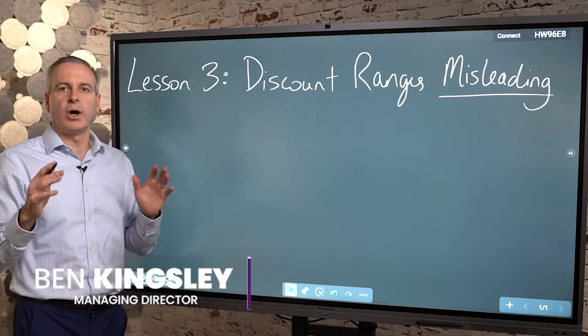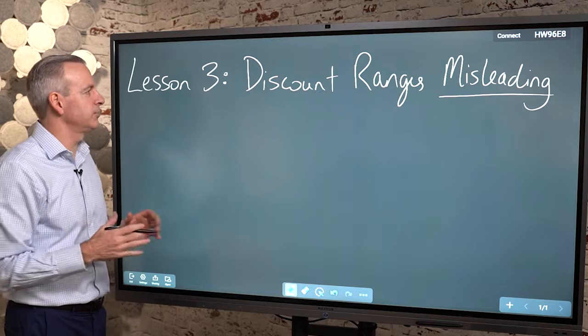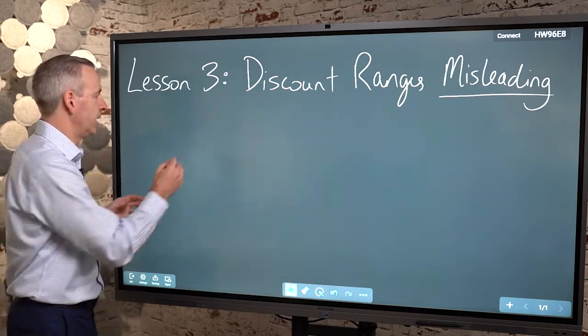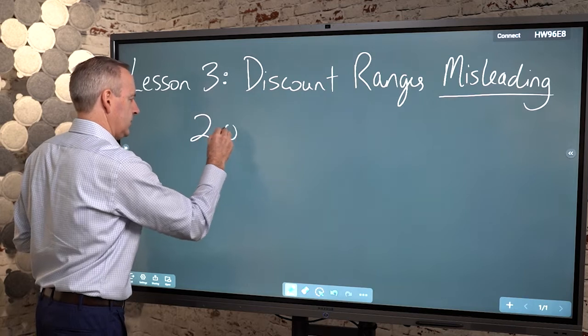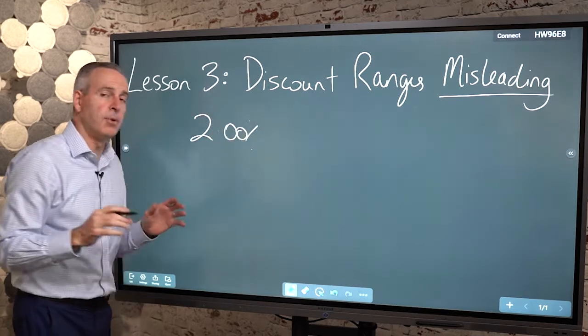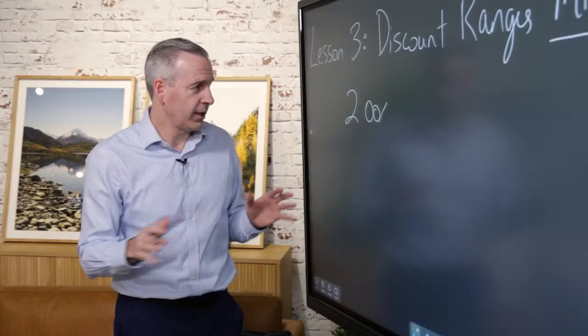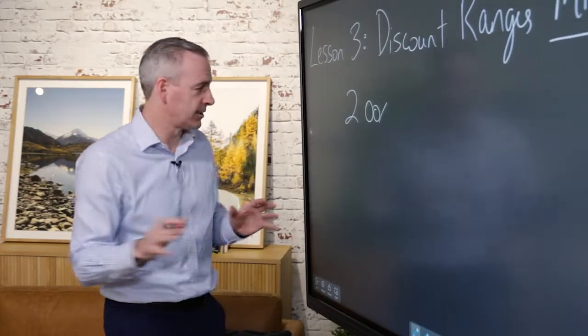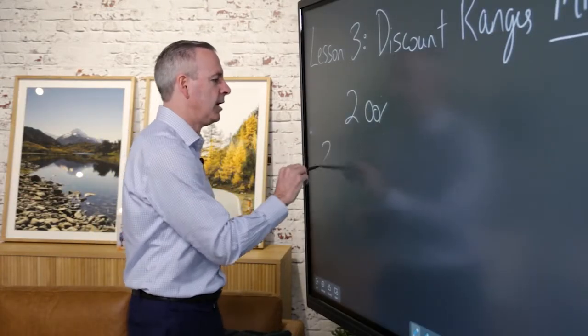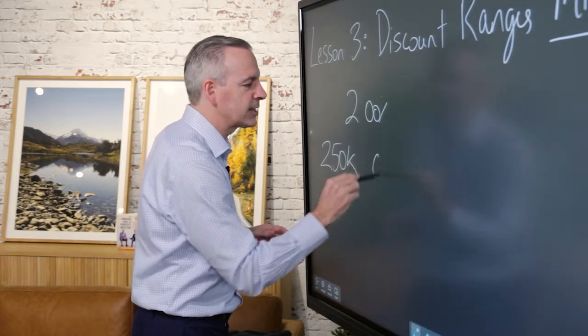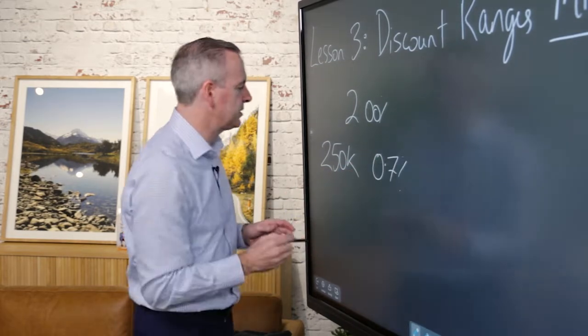Now what you might hear at the local barbecue or something like that when we're talking about interest rates, people will talk about, oh well I've got a 2% discount. Now I've been a mortgage broker since 2004 and I can tell you the discount rates that we used to see on a $250,000 loan, we would see discounts of around 0.7% or 1%.